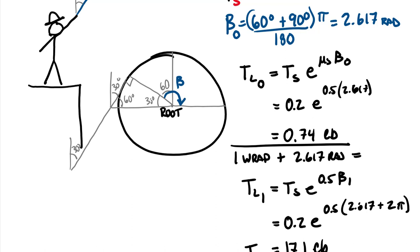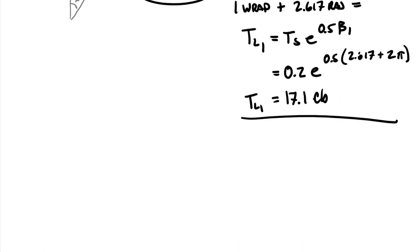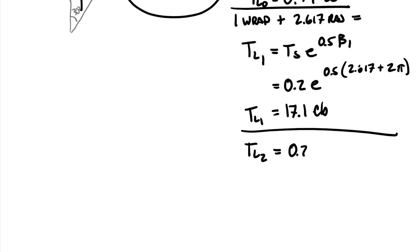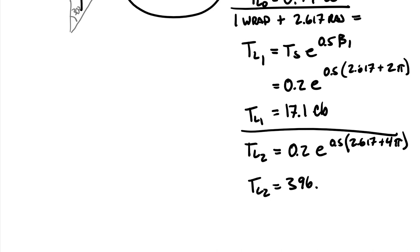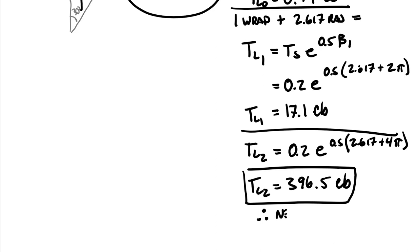Let's try two wraps. T sub L with two wraps equals 0.2 times e to the (0.5 times (2.617 plus 4 pi)). T sub L two equals 396.5 pounds — that exceeds 250 pounds. Therefore Indiana Jones needs two full wraps of his whip around the root to safely swing across the chasm.